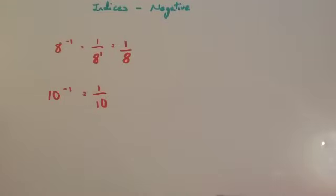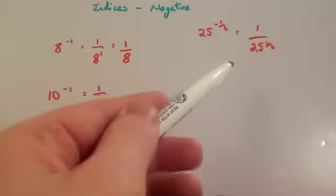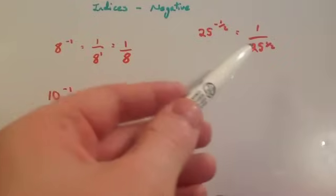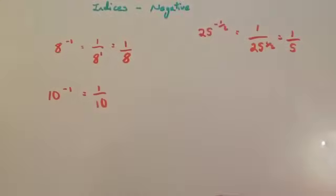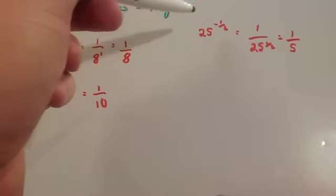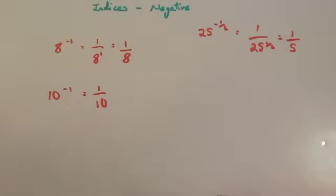This also works for fractional indices — also look at the video on fractional indices. If you had 25 to the power of minus one half, that would be 1 over 25 to the power of one half. Whenever it's the power of one half, you square root it. So you're going to get 1 over the square root of 25, which would be 5. So 25 to the power of minus one half would be 1 fifth.